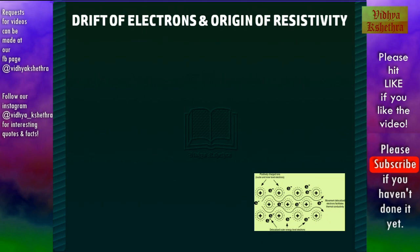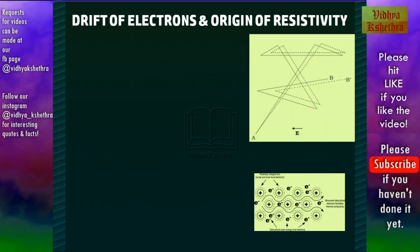Now we shall see the drift of electrons and origin of resistivity. In the case of metals, it consists of fixed positive ions and electrons in motion. And these electrons always undergo random collisions with the fixed positive charges. Now under an electric field, the movement of electrons is such that it drifts by a distance as is shown in this figure.